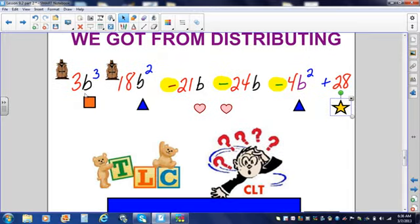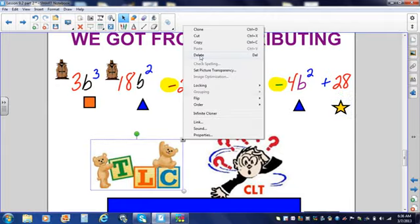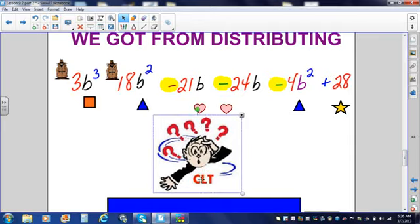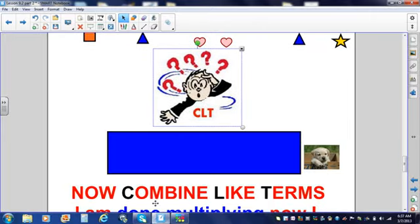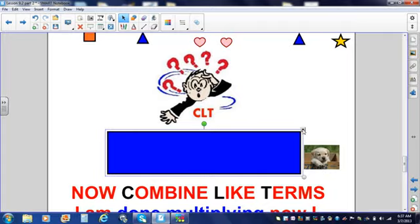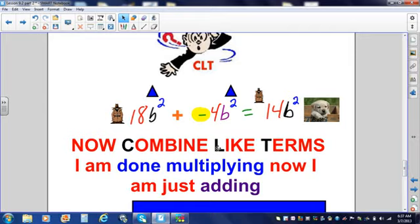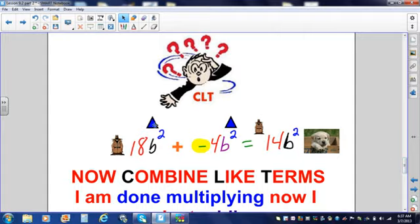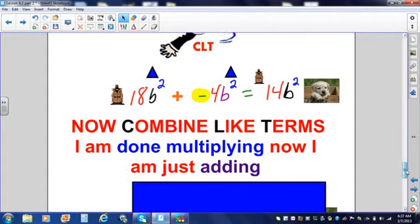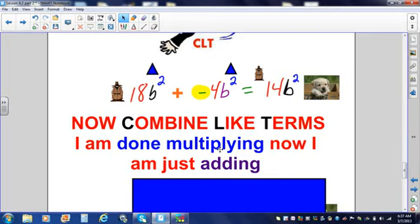Now what are we going to do? We're going to give all these terms some TLC. Oh, wait a second. That's not what I meant to write. We're going to give all these terms some CLT. CLT? You don't know what CLT means? Oh my gosh, come on. CLT means combine like terms. Give them some CLT, combine like terms. So I'm going to take my two triangles, and I'm going to combine them. Remember, we are done multiplying. Now that we're giving them some CLT, we're just adding. We're just adding.